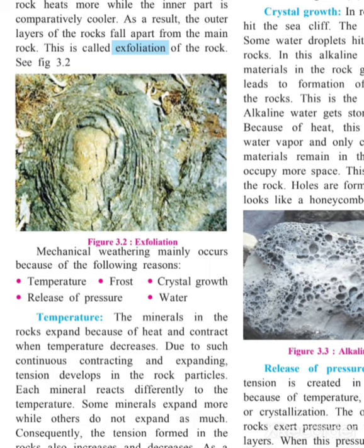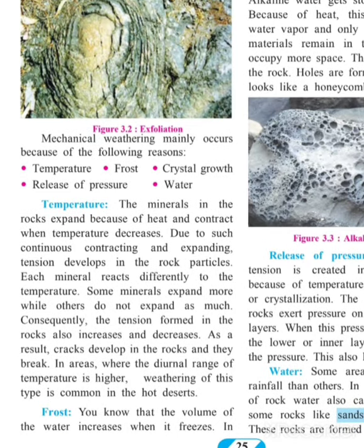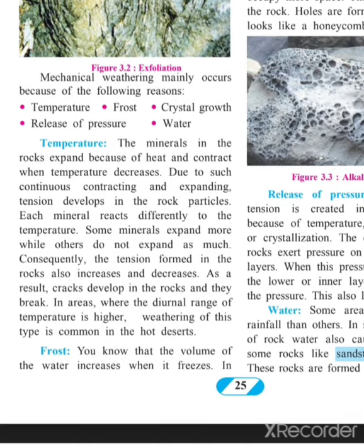Next, we are going to study how mechanical weathering takes place. It happens because of five reasons: temperature, frost, crystal growth, release of pressure, and water. With the help of all these, mechanical weathering takes place. Let us see one by one what mechanical weathering is, and make sure you have understood exfoliation — the same process that happens with stones and rocks. Let us study mechanical weathering with the help of temperature.